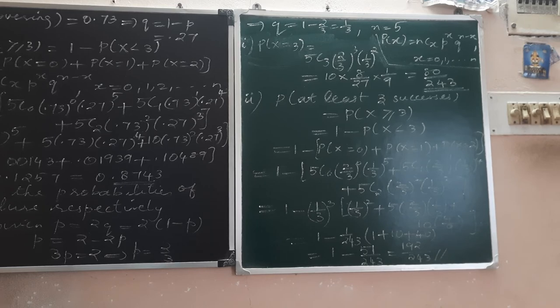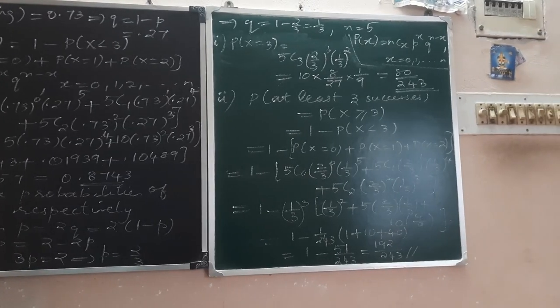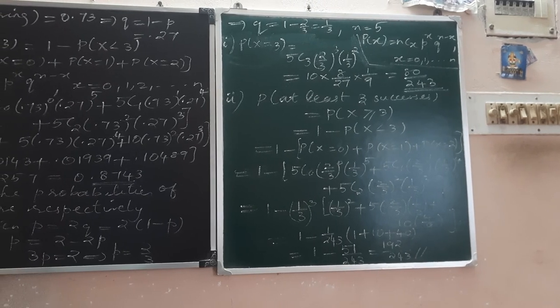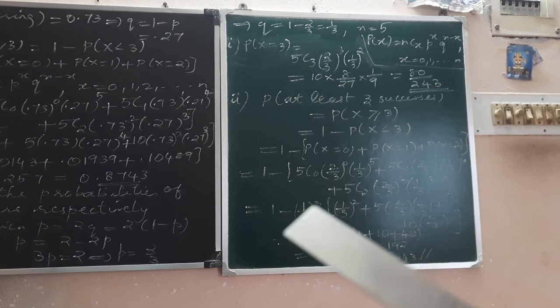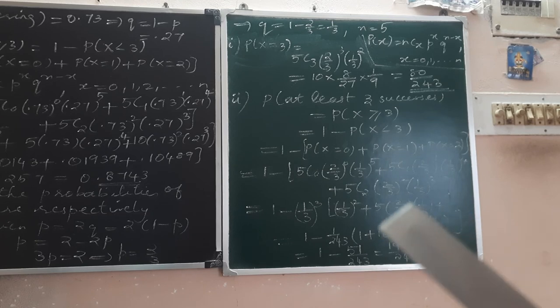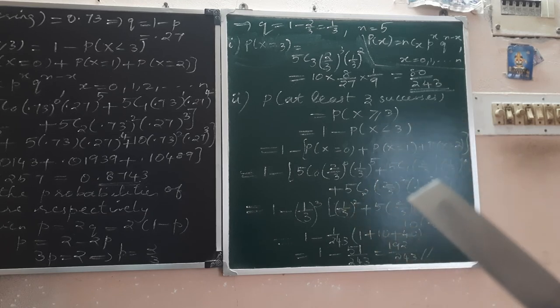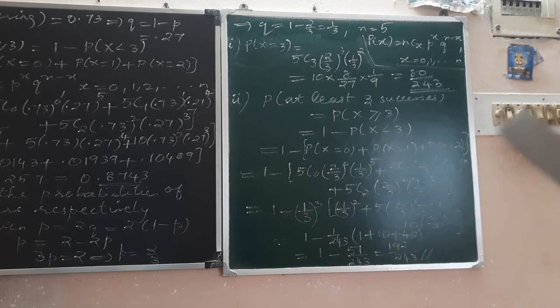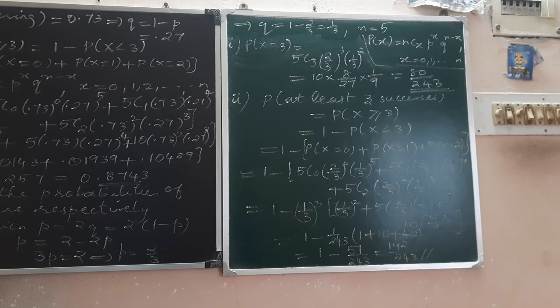For at least 3 successes, that is 1 minus P of X equals 0, plus P of X equals 1, plus P of X equals 2. Which means 1 minus [5C0 times 2 by 3 power 0 times 1 by 3 power 5, plus 5C1 times 2 by 3 power 1 times 1 by 3 power 4, plus 5C2 times 2 by 3 power 2 times 1 by 3 power 3].